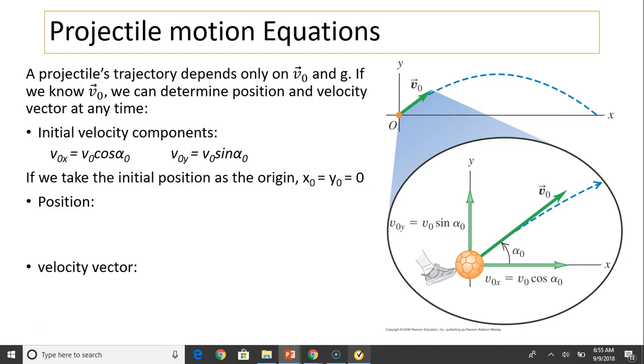If we take the initial position as the origin, at time t equals 0, we set x0 equals y0 equals 0. Then its position x and y can be written as follows. Because acceleration in the x direction equals 0, x becomes v0 cosine α0 times t. y at any time equals v0y times t minus 1/2 g t squared, because acceleration in the y direction is negative g. We can substitute v0y equals v0 sine α.